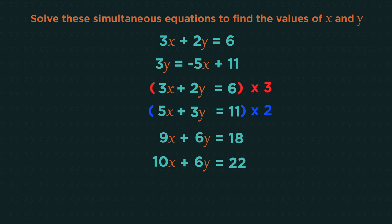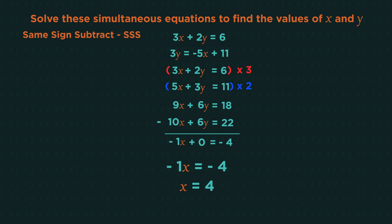Now to eliminate. Remember, same sign subtract. Both are plus 6y, so we subtract the equations. 9x minus 10x is minus 1x. Plus 6y minus 6y is 0. 18 minus 22 is minus 4. Solve for x means x is 4.